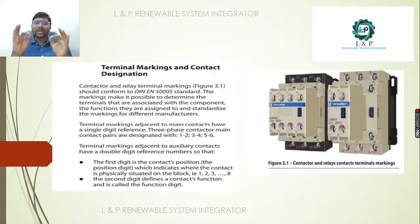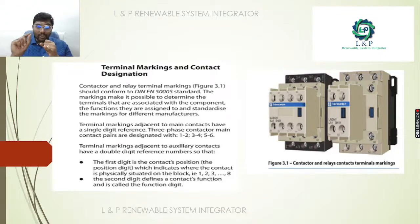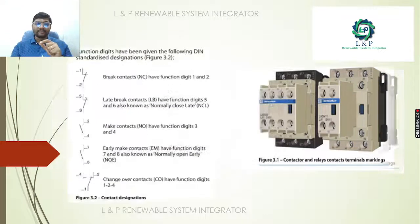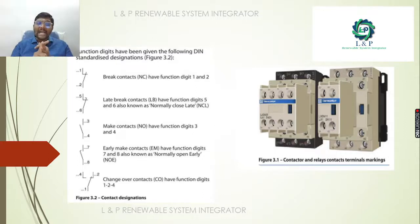Terminal marking and contact designation: this is an example of a contactor and relay terminal marking. The first digit is the contact's position, indicating where the contact is physically situated — it can be 1 through 8. The second digit defines the contact function. For a normally open break contact, the function digits are 1 and 2. For a late break contact, the function digits are 5 and 6.